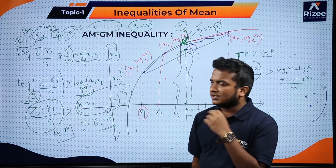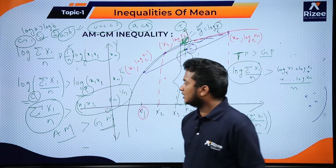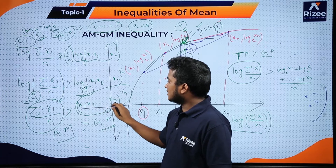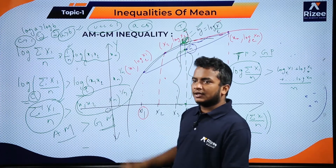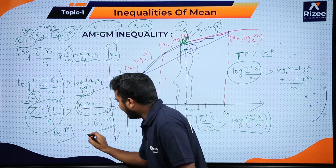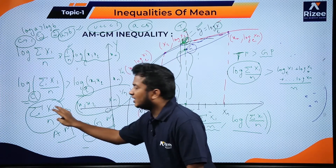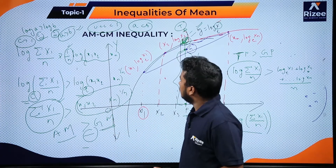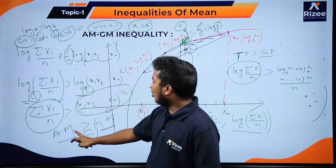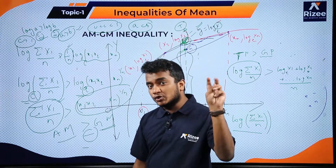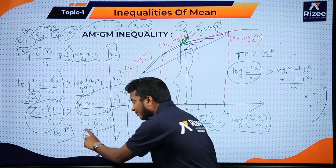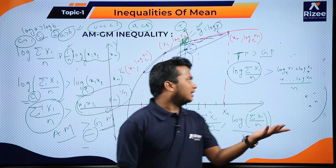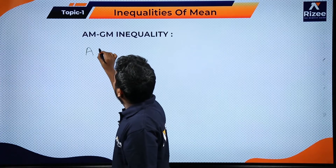AM equals GM only if all terms are equal: a₁ = a₂ = ... = aₙ. So we have proved AM ≥ GM for n positive quantities. Thus AM of x₁, x₂, ..., xₙ is greater than or equal to GM of x₁, x₂, ..., xₙ.